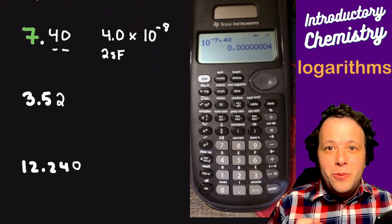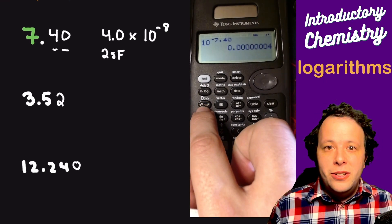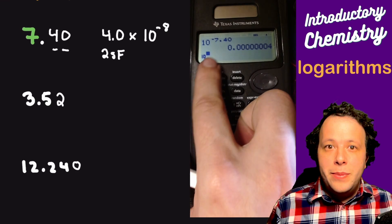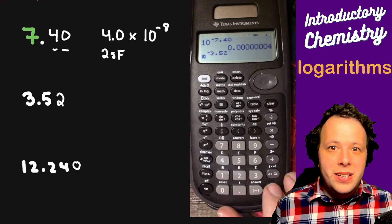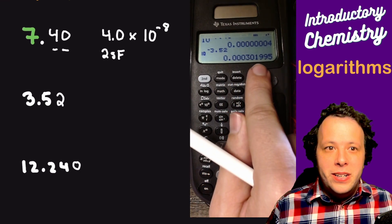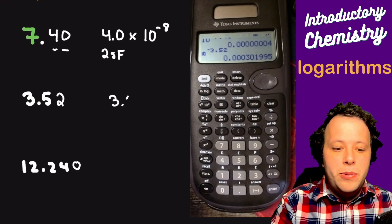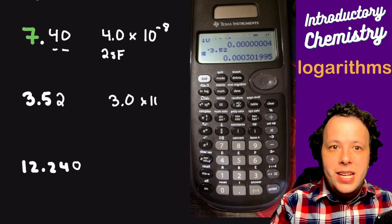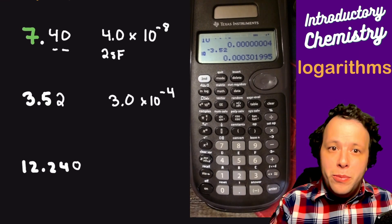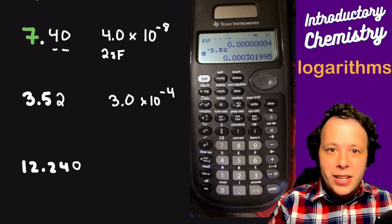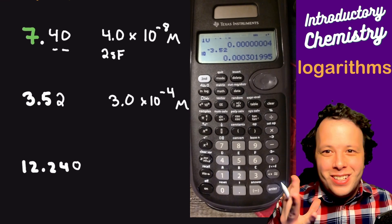The next one, we have 3.52. I'll show you how to use the other way. We're going to hit the 10 button twice to make sure it says 10. Now we'll raise that to 3.52. We'll hit equal, and now we have our new number here. Being that we had two decimal places, we need two sig figs. So we are going to say 3.0 times 10, and we need to count how many spots—that's four positions that moves. It's going to be 3.0 times 10 to the negative four. And remember, these represent molars is what these show, so remember units—your professors expect that.